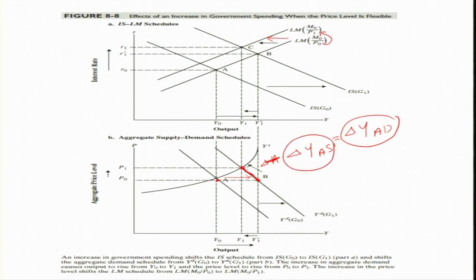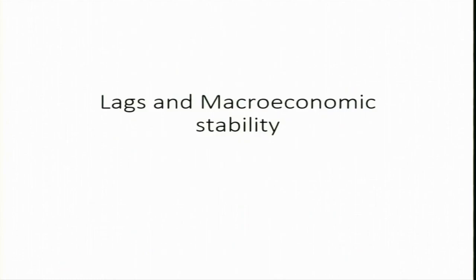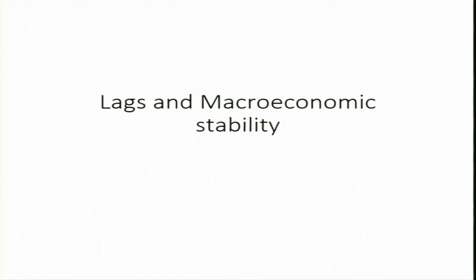Since we discussed using IS-LM diagrams that expansionary fiscal and monetary policy benefit the economy through increases in aggregate demand and aggregate supply, the way it looks graphically seems very simple. But in the real world it is not that easy and straightforward. There are several lags in the real macroeconomy. Let us discuss these one by one and comment on the effectiveness of fiscal and monetary policy.